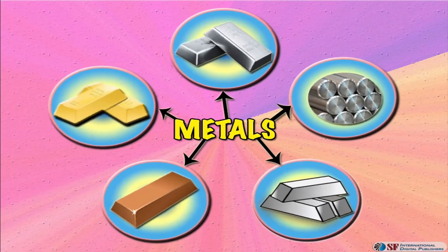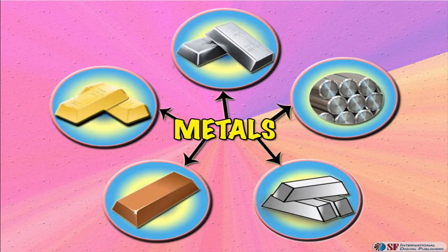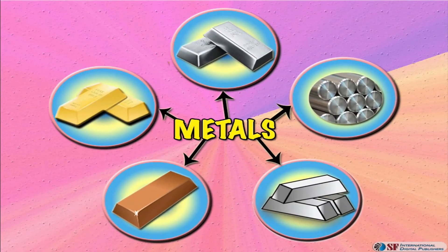Let us look into the characteristics and uses of metals, their level of conductance — which is the ability of a metal to allow electricity to flow through it — and at the end we will also tell you about its symbol.